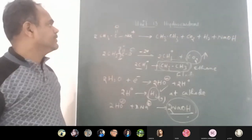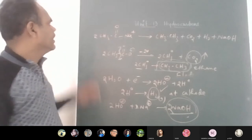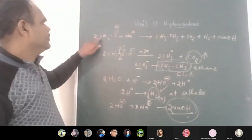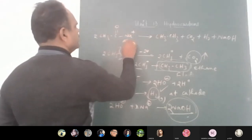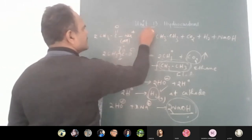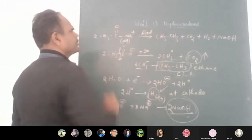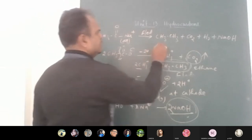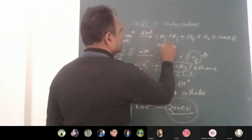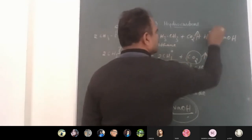So in Kolbe's electrolytic process, from two moles of sodium acetate we get: first, ethane; second, CO₂ gas; third, hydrogen gas; fourth, sodium hydroxide. Methane preparation is not possible by this electrolysis method because you cannot get methyl free radicals that way — when sodium acetate is subjected to electrolysis you get ethane.